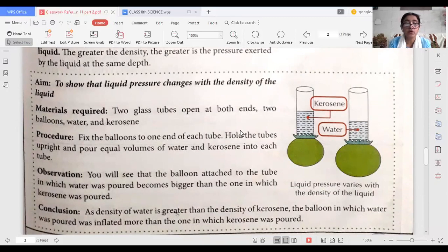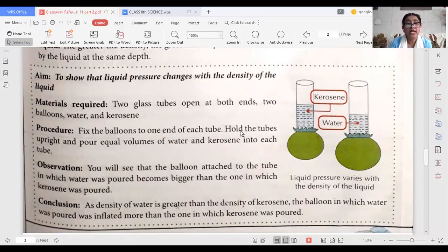Then what we will observe? Later on we will observe that we poured equal amounts but the tube in which water was poured became bigger than the one in which kerosene was poured.